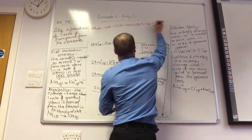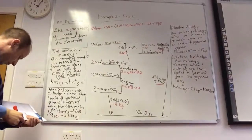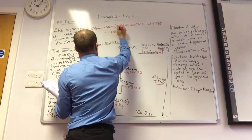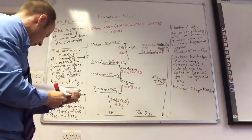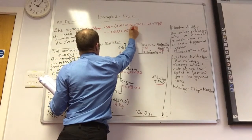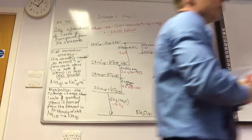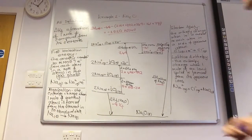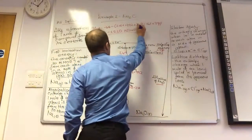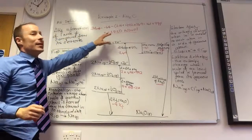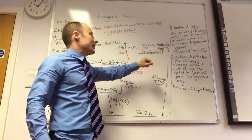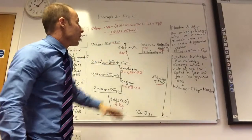So you work out those brackets — make sure you get the number that I get. You should get minus 2478. What do you notice about that number compared to the other one we did? It's more negative — more exothermic.